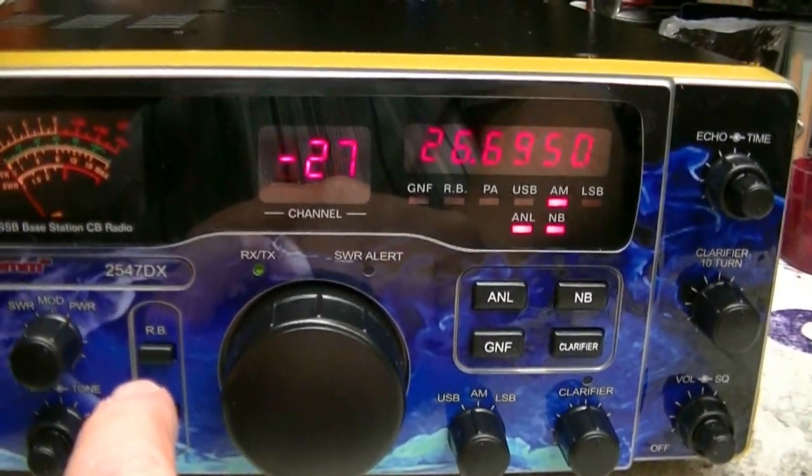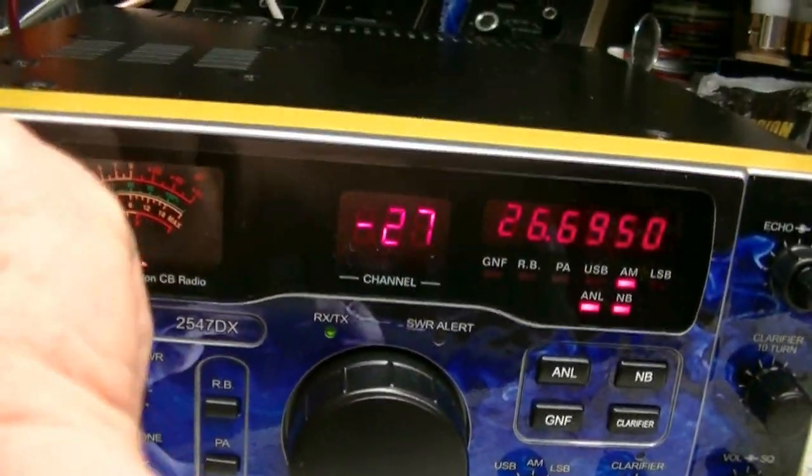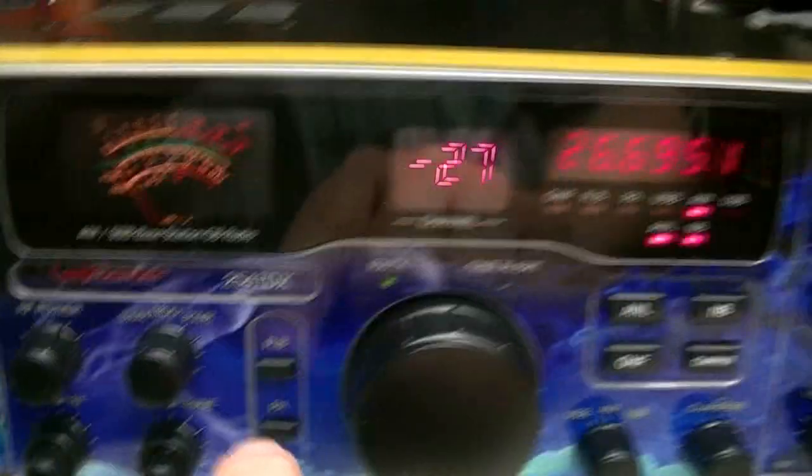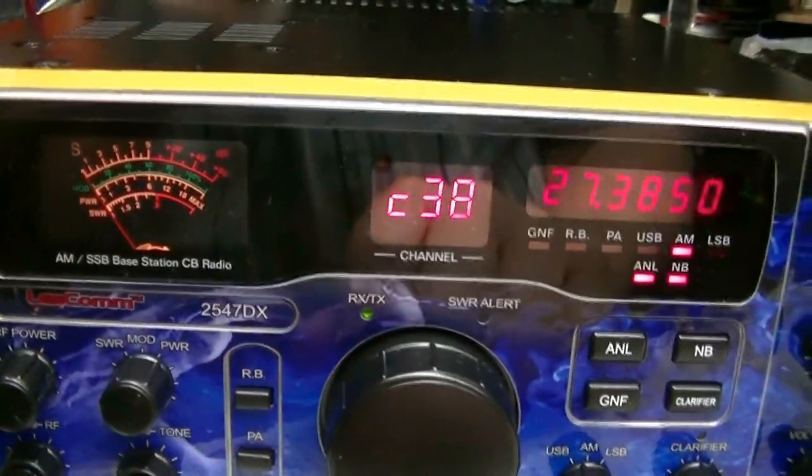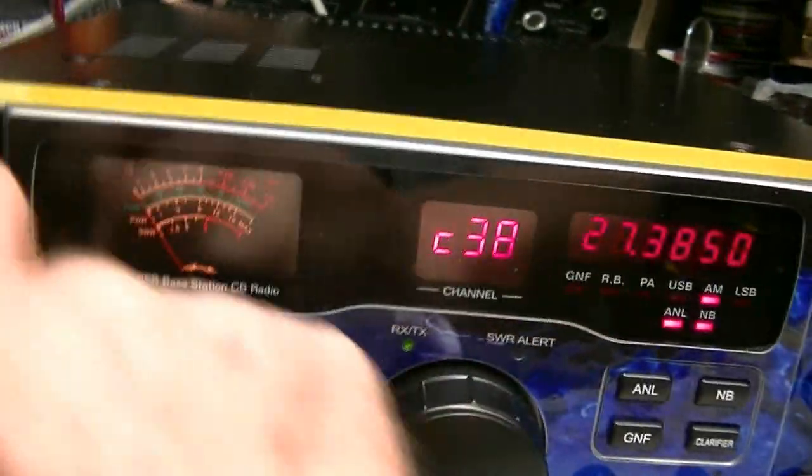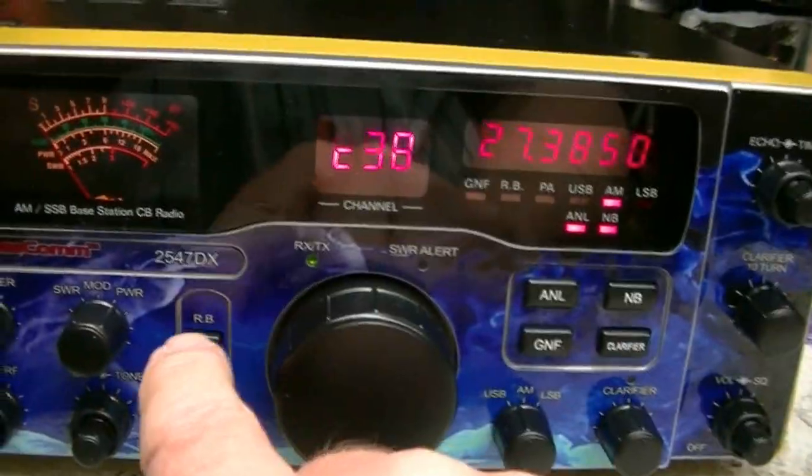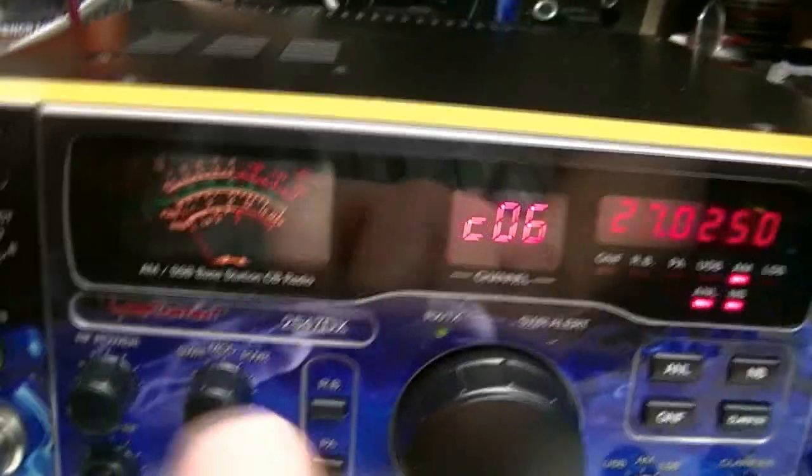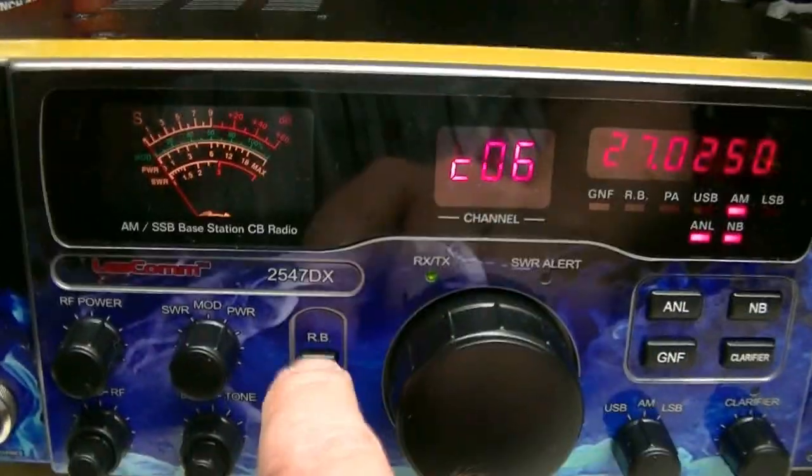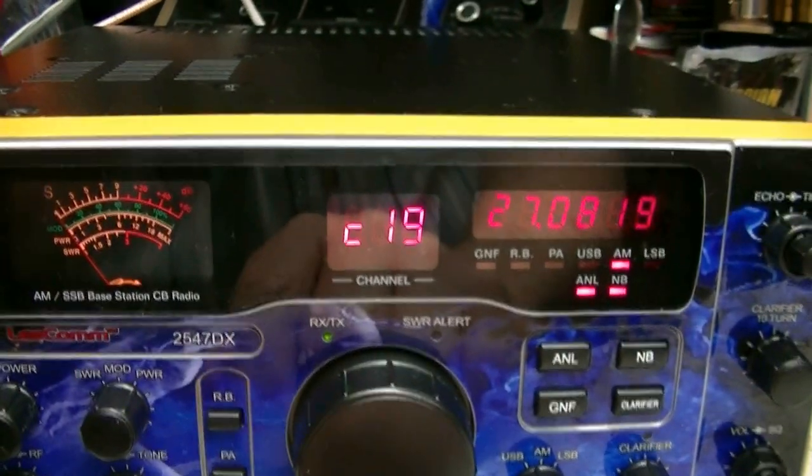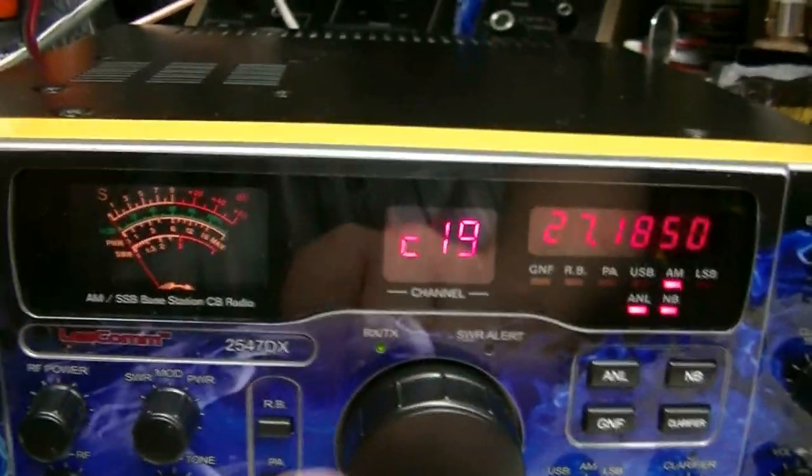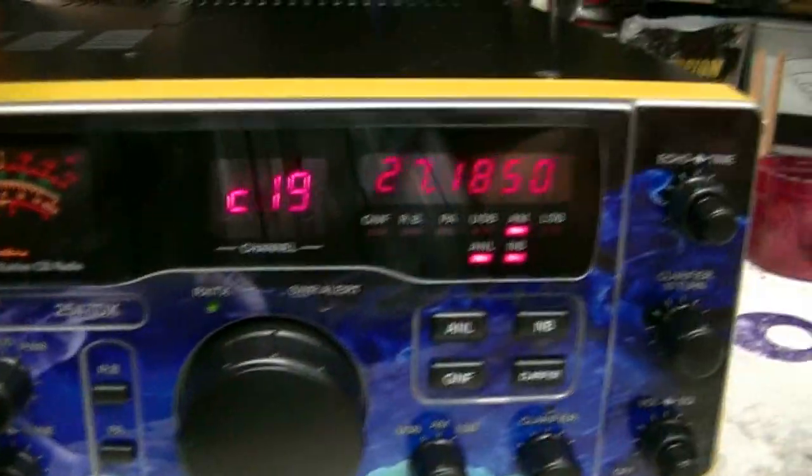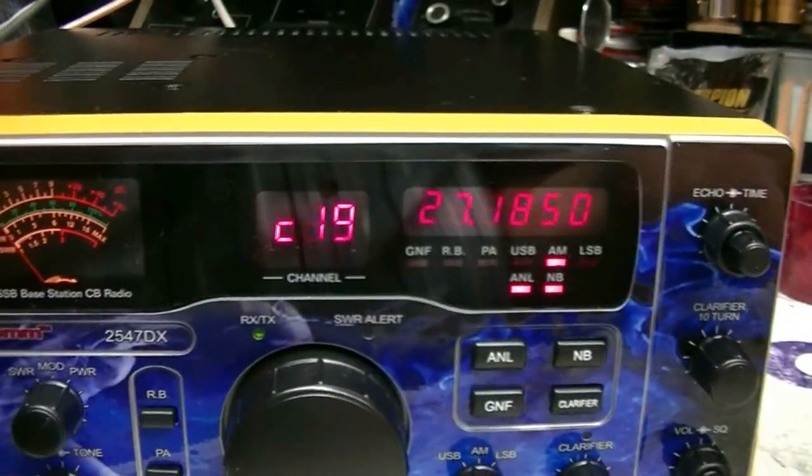Now let's say you want to go back to 38. Rotate the memory select button to E, hit the RB button. Now you're back on 38. Let's see, what do we store in C? Channel 6. What do we store in D? We store 19 in D. There's your memory channels. You can program them whatever frequency you want.